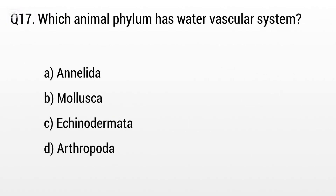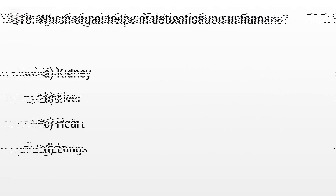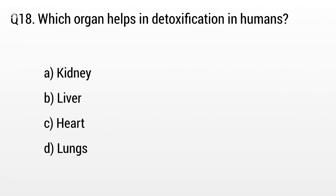Question 17. Which animal phylum has a water vascular system? Option A: Annelida, B: Mollusca, C: Echinodermata, D: Arthropoda. The right answer is option C, Echinodermata.